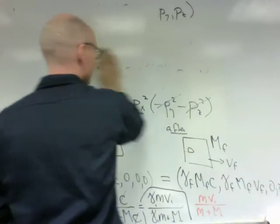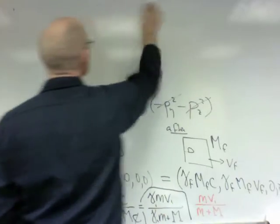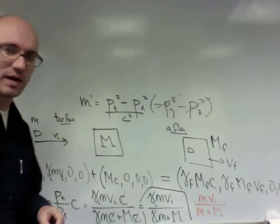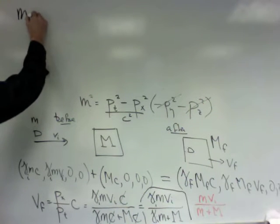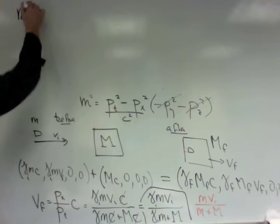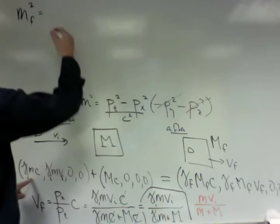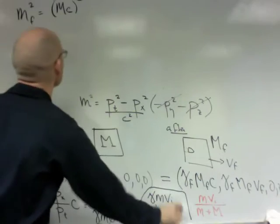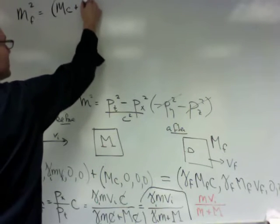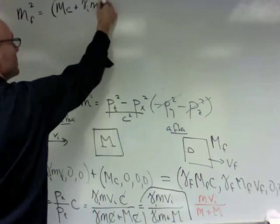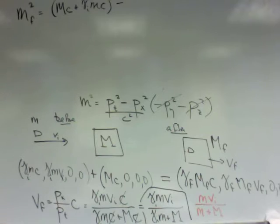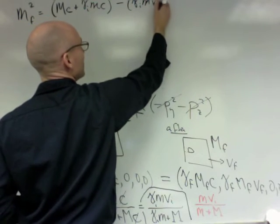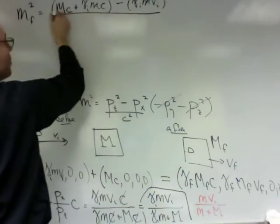Okay, so now we're going to use this expression here for the mass. The mass is just the time component squared minus the space component squared over c squared. So the final mass squared will be the time component, which is the sum of these two squared, mc plus gamma imc squared minus the space component px, which is gamma mvi plus zero, squared all over c squared.